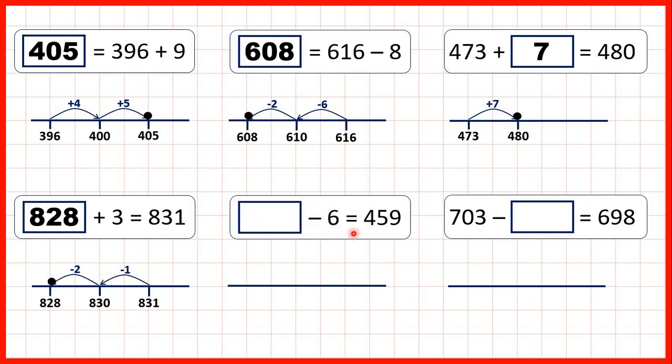Something minus 6 equals 459. When we have the first number of a subtraction missing, we can add to find our missing number, because subtraction questions can be read backwards as addition questions. So we can start with 459 and add 6 to get our missing number. Adding 1 takes us to 460, and then we can add another 5 to get to 465. So if we subtract 6 from 465, we will get 459.